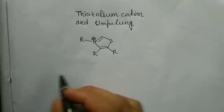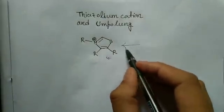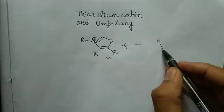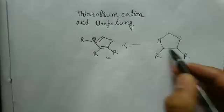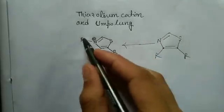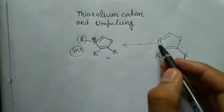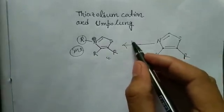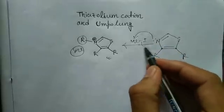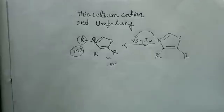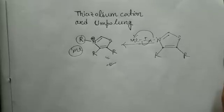This is the structure of the thiazolium cation. How is it prepared? If you consider the thiazolium ring and alkylate it — say with a methyl group — then if you treat this thiazole compound with methyl iodide, the nitrogen lone pair will attack the methyl carbon, I⁻ will leave, and you will get the thiazolium cation. This thiazolium cation is the active reagent for all the reactions we will discuss.